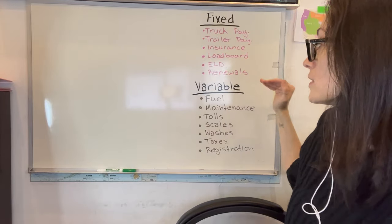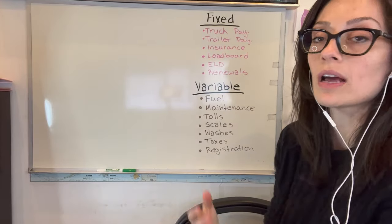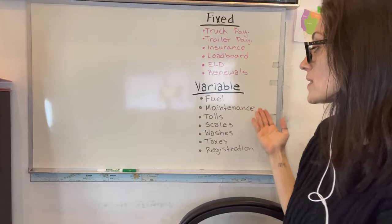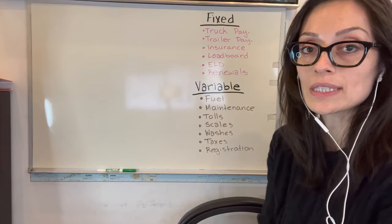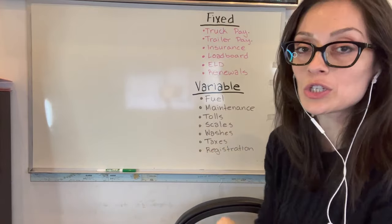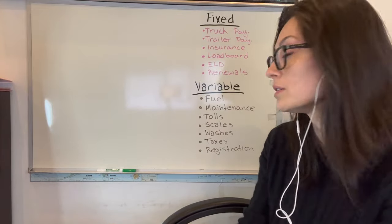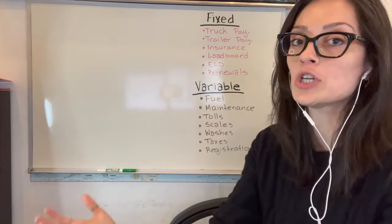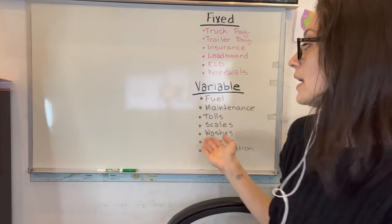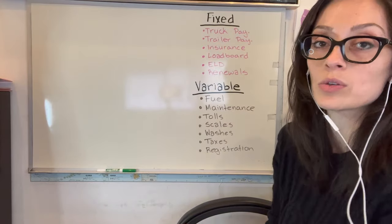On the other hand, there are variable costs. Variable costs are those that do change depending on how much you run. For example: fuel, maintenance, tolls, scales, washes, taxes — the quarterly taxes all depend on how much you actually ran. Registration fees, if you're doing apportioned license plates, also depend on your miles. They change from month to month. If your truck is parked, you don't have to pay most of these things. If your truck is running, it depends how much it runs and then you can figure out what your cost is.